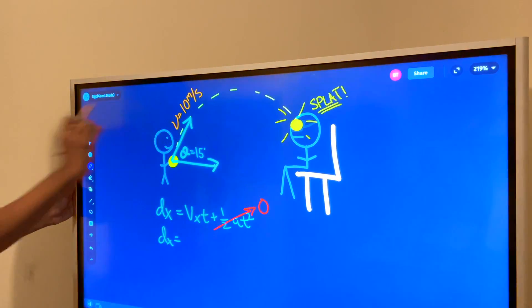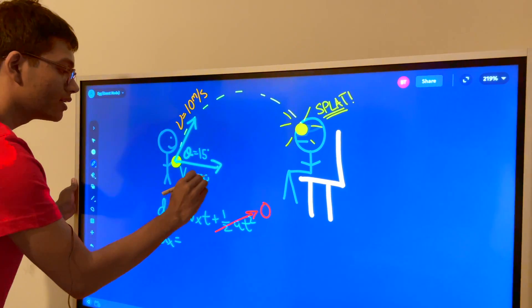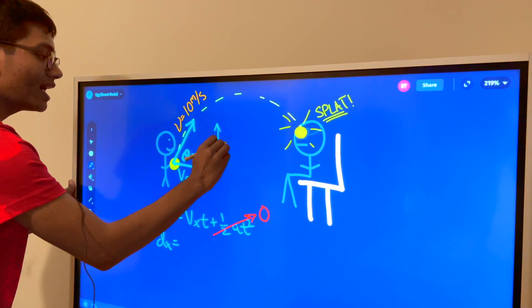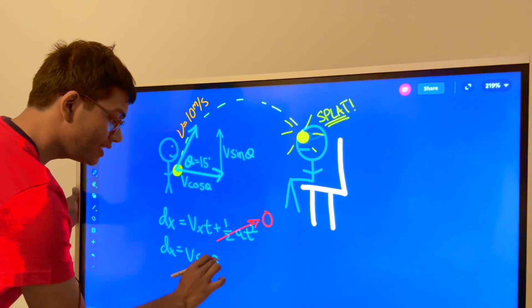Well you can decompose this vector into two coordinates. Number one, the x coordinate is going to be v*cos(θ). The y coordinate is going to be v*sin(θ). And so instead of writing v_x I can just write v*cos(θ). Now how do I find t?